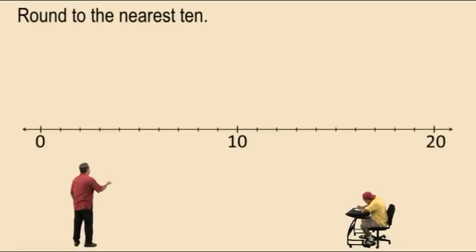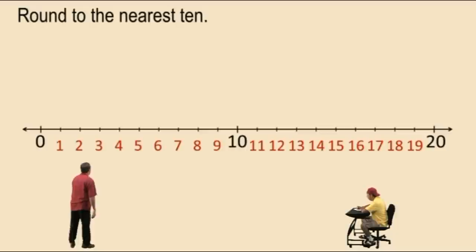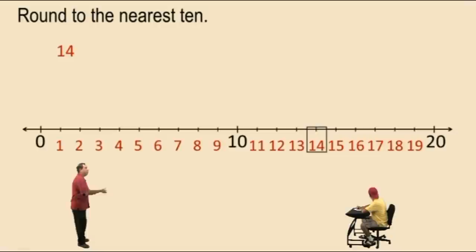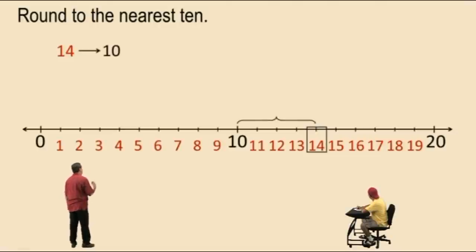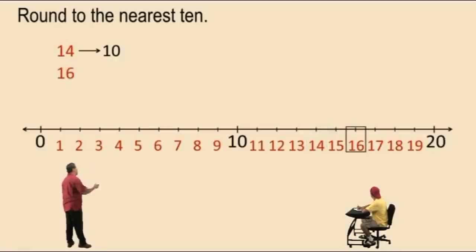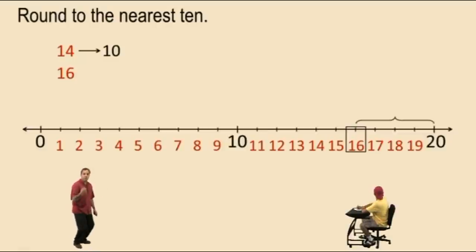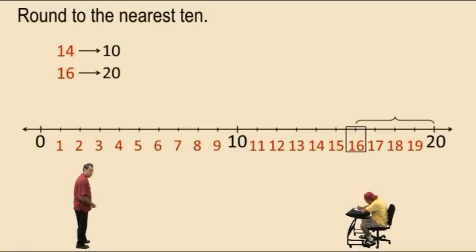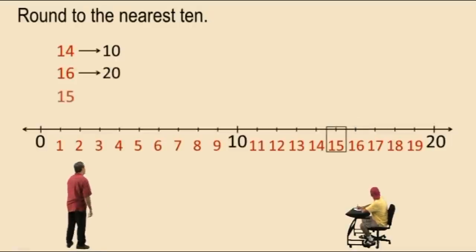Here's a number line with tens on it, and we're going to round numbers in between these tens to the nearest ten. Let's begin with the number 14. Now 14 is right in between 10 and 20, but it's closer to the 10, so we say 14 rounds to 10 — that's the nearest ten. What about the number 16? 16 is in between 10 and 20 but it's closer to 20, so we say 16 rounds to 20.